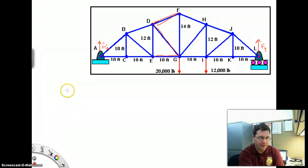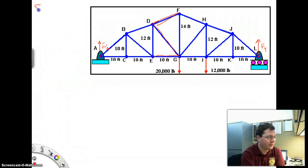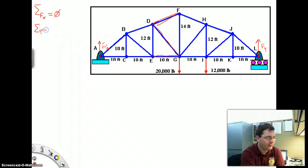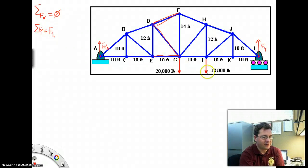Let's start by writing our fundamental statics equations. The sum of the forces in the x-direction - there are none, so they all add to 0. The sum of the forces in the y-direction is the force in the y-direction at A minus this 20,000-pound load minus this 12,000-pound load, minus 32,000 pounds plus the reaction at point L, f sub y sub L.